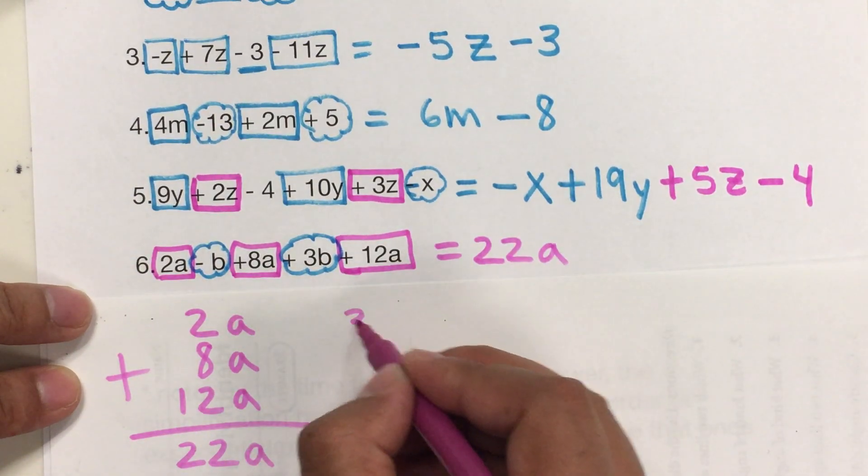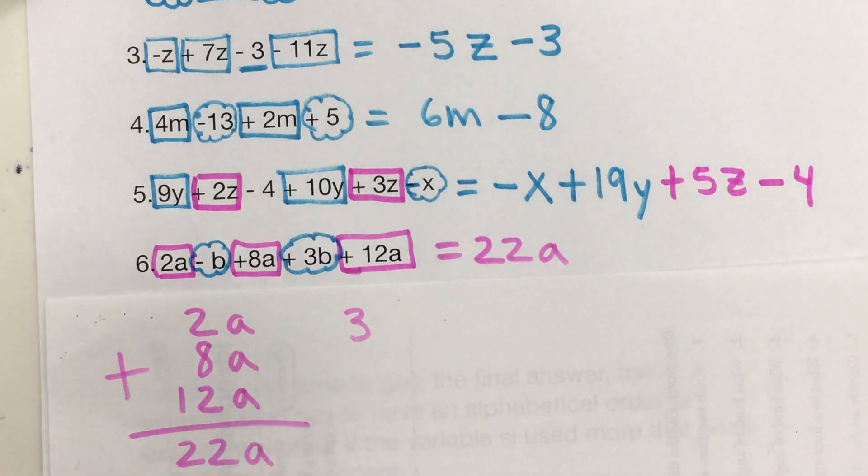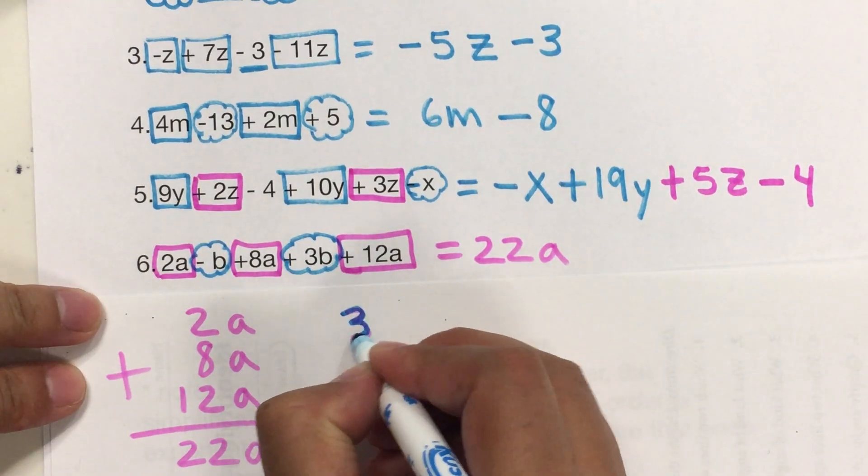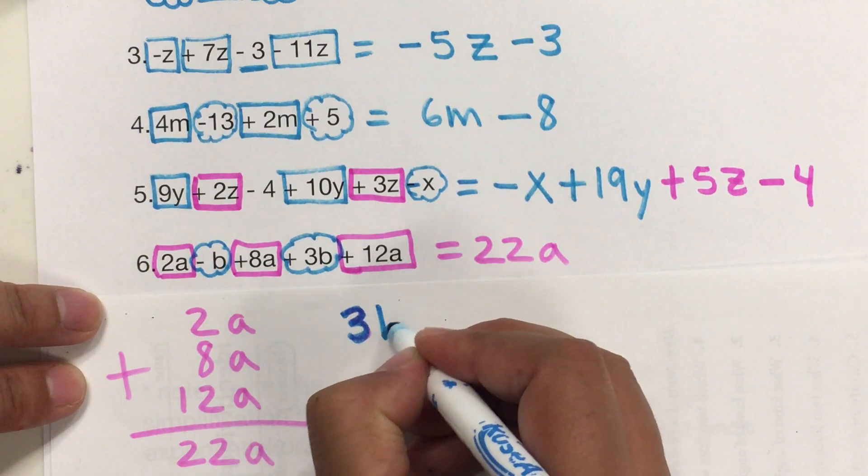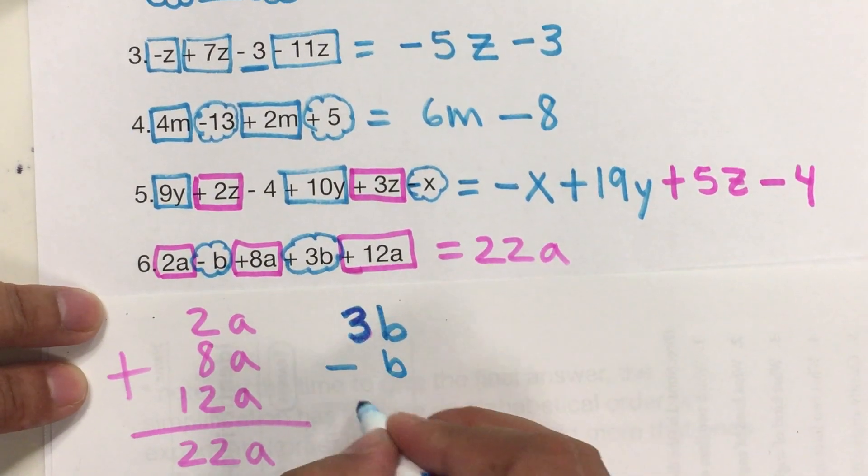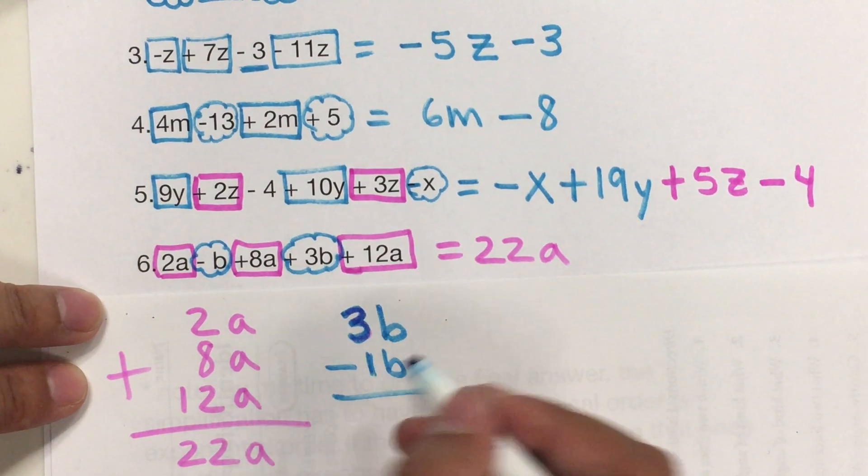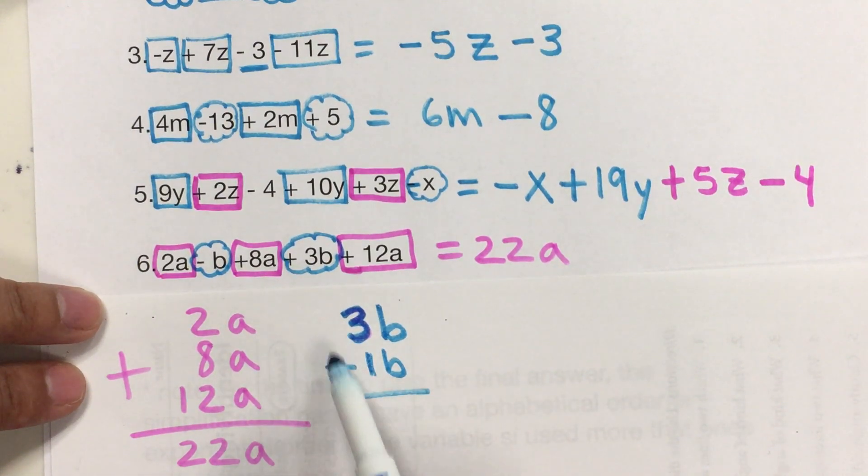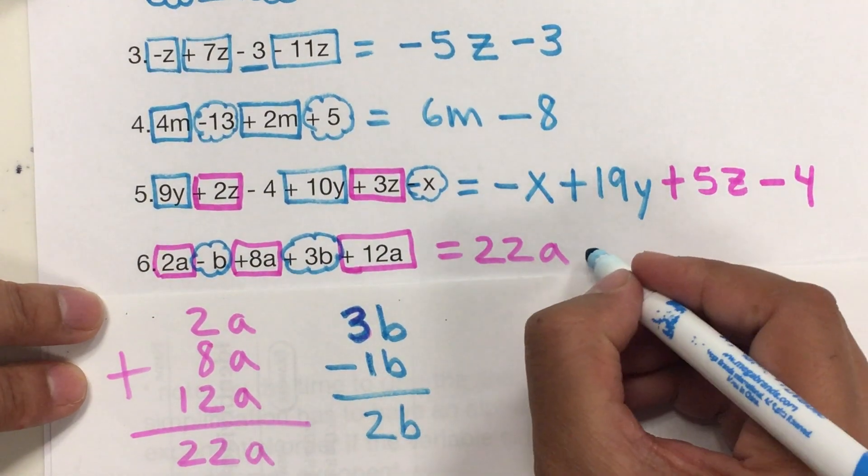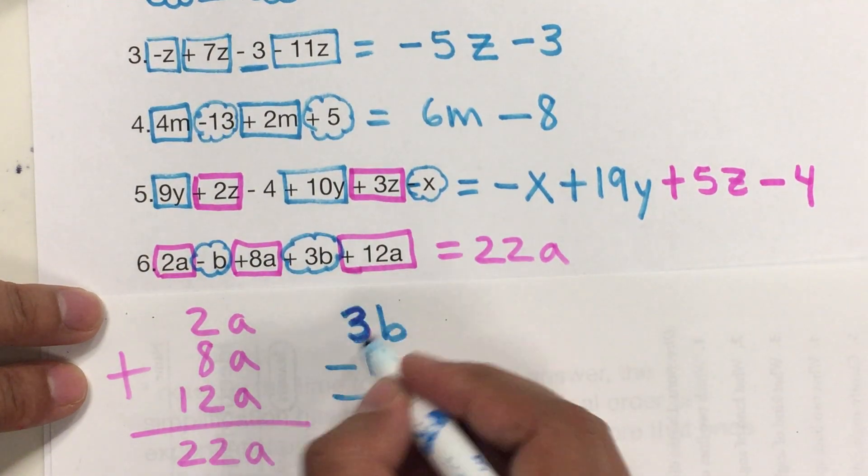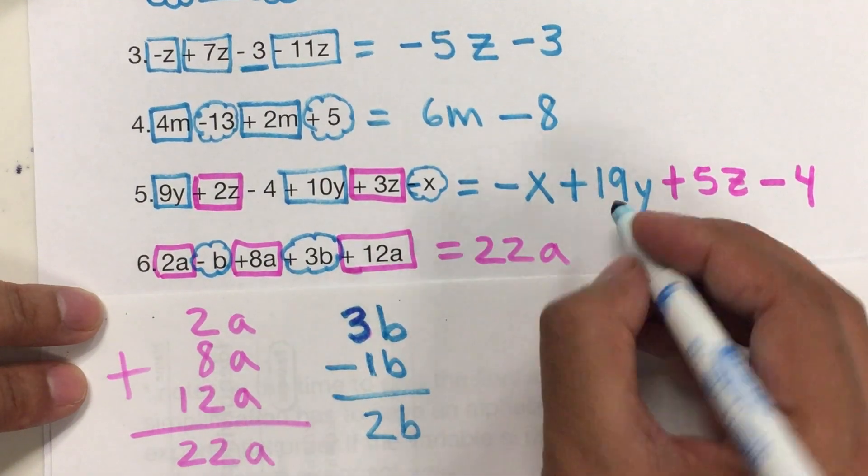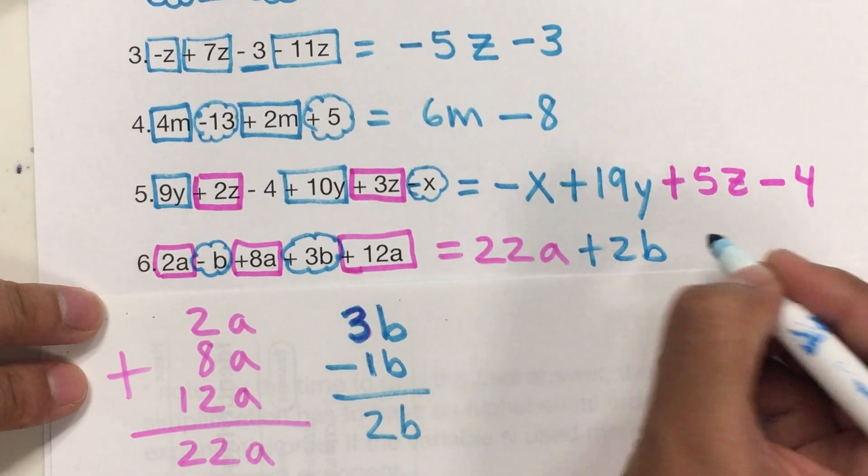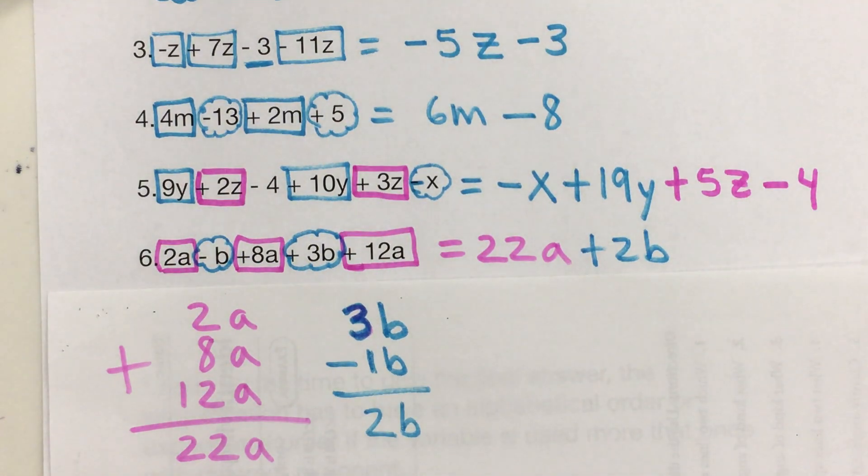And then, for the B, I have 3B. Again, it doesn't matter if you use the same color. Just make sure that you look at the shapes. 3B and negative B. In here, it's like if you have negative 1B. So, when you have different signs, you don't add. You subtract. And so, 3 minus 1 is 2B. So, that's going to be the answer. Since it's not there. And keep the sign of the bigger one. It's positive. So, we're going to put plus 2B in here. So, basically, that's it.